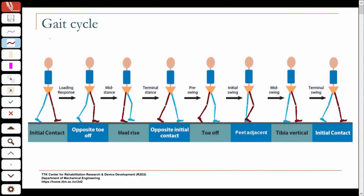As I mentioned in the last class, this picture of the gait cycle is something that you should really become familiar with. As a quick recap, the key events in the gait cycle: one gait cycle is from initial contact to initial contact of the same leg. The events are initial contact, then the opposite leg toes off, then slowly the stance leg heel rises and the opposite leg contacts the ground because that has completed its swing.